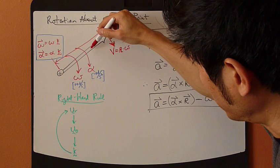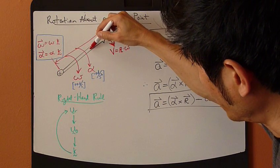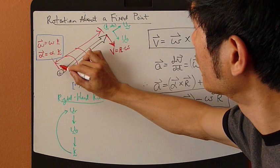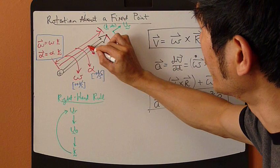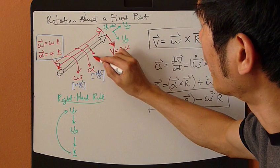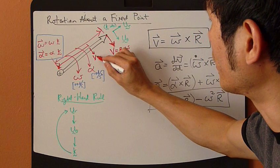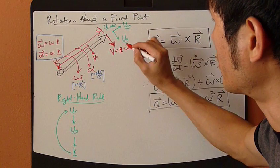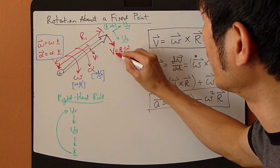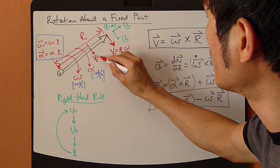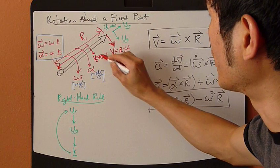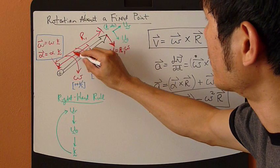If I want to find out the velocity at another point, it'll be a little less because the radius from here to there is a little less. So velocity 2 is R2 times omega, that's R2.